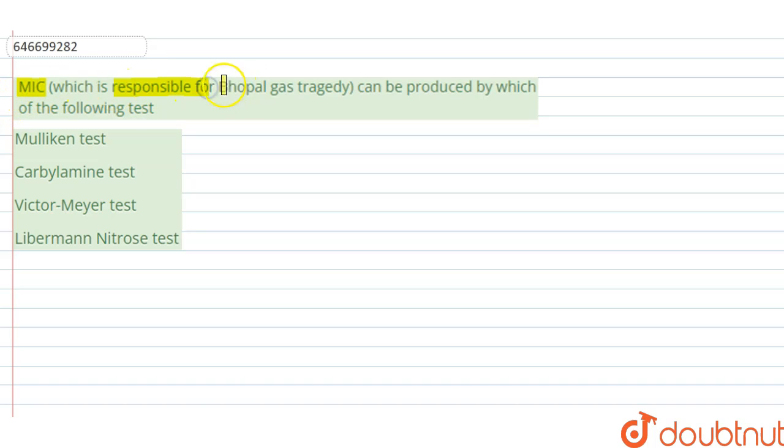Hello students, the question is: MIC, which is responsible for Bhopal gas tragedy, can be produced by which of the following test? Options are: Mullican test, Carbolamine test, Victor Mayer test, Liberman Nitros test. So in the question we are given MIC which was responsible for the Bhopal gas tragedy. So MIC is methyl isocyanide.